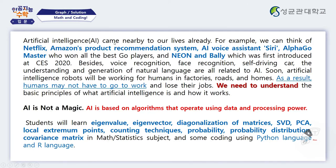Artificial intelligence has come nearby to our lives every day. For example, we can think of Netflix, Amazon's product recommendation system, AI voice assistants, AlphaGo master who won against the best Go players, and Neon and Bali, which was first introduced at CES 2020. Besides those, voice recognition, face recognition, self-driving cars, and the understanding and generation of natural language are all related to AI.